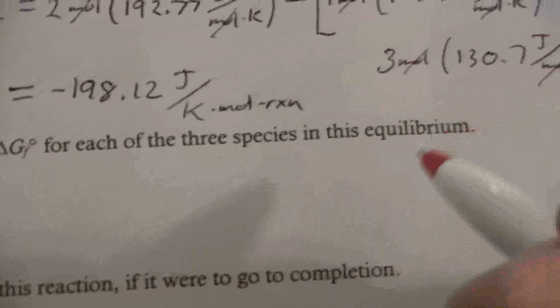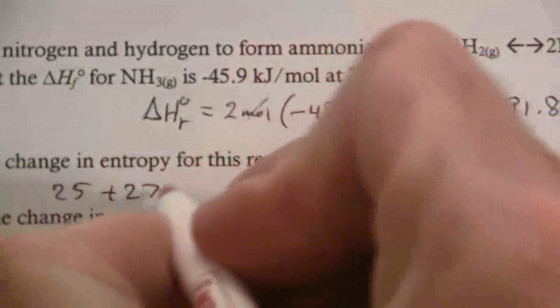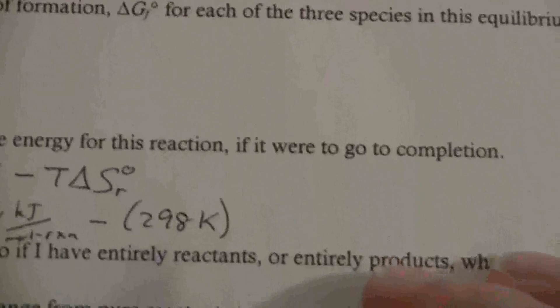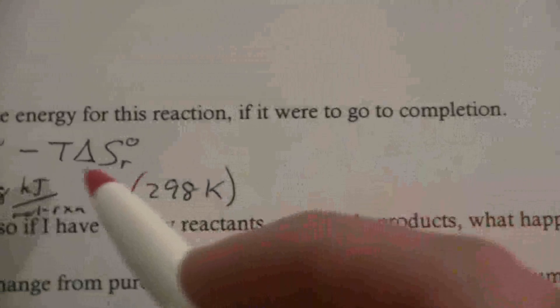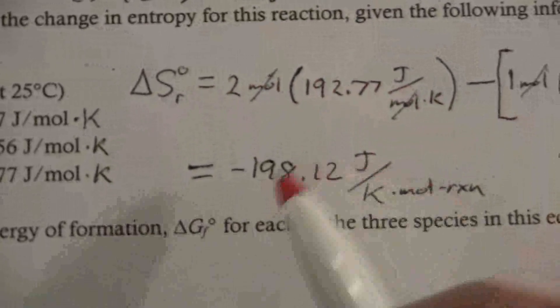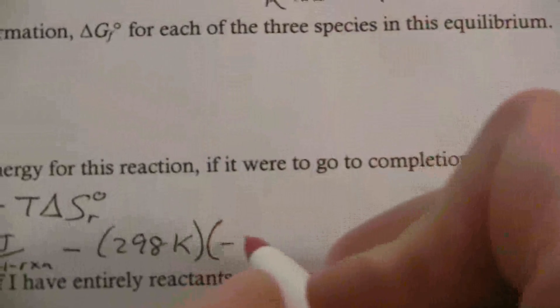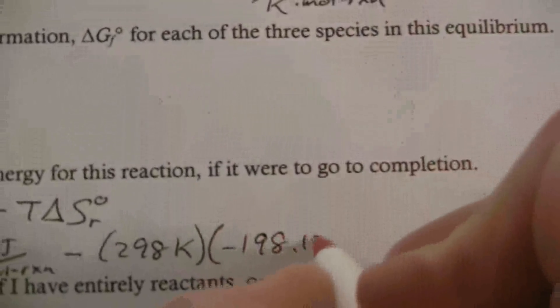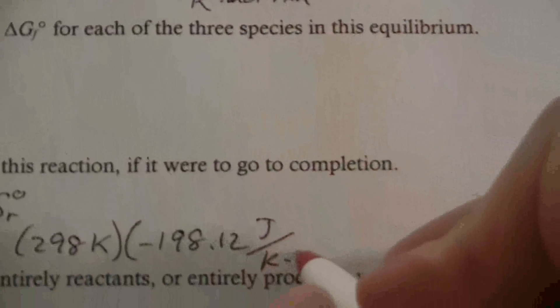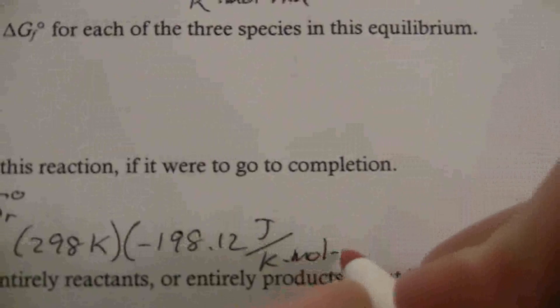That's our 25 degrees. If we take that 25 degrees, add 273, you get 298 Kelvin. Then we have the delta S. Delta S, we calculated for this reaction, negative 198.12 joules per Kelvin times the mole of reaction.